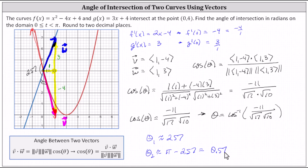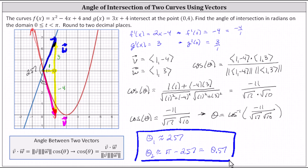So you may be asked to find either the acute or obtuse angle of intersection, or you may be asked to find both. I hope you found this helpful.